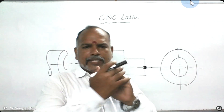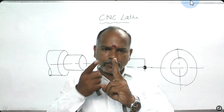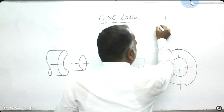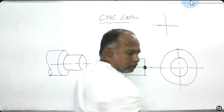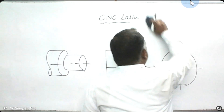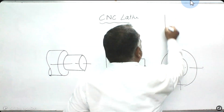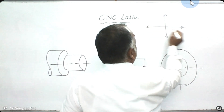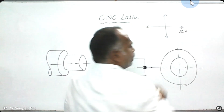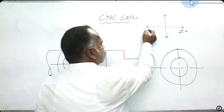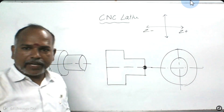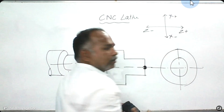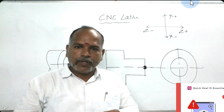According to CNC turning, we will be using two axes: one is X-axis and then Z-axis. If you see the graph, this is Z-plus, Z-minus, X-plus, X-minus. This is the graph.